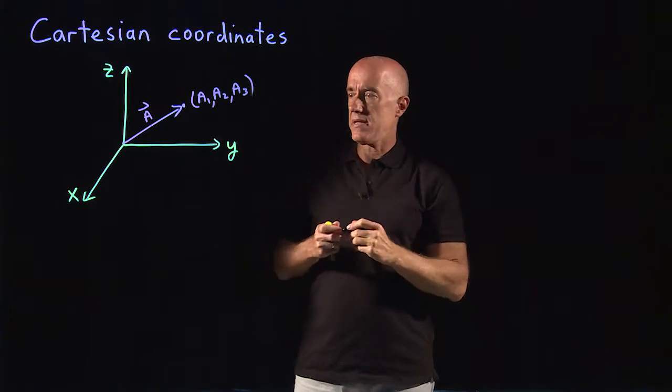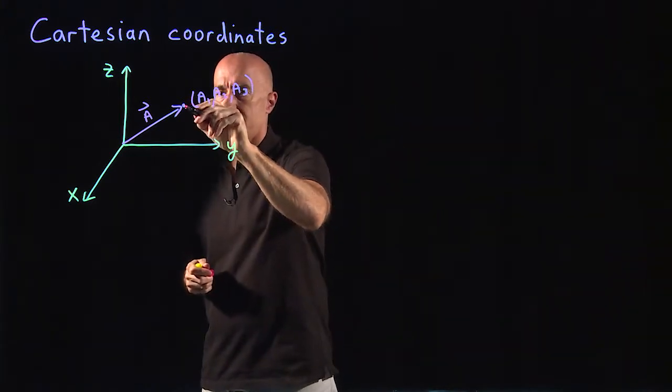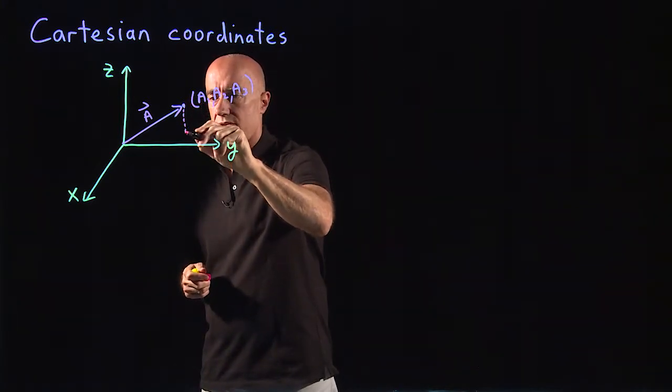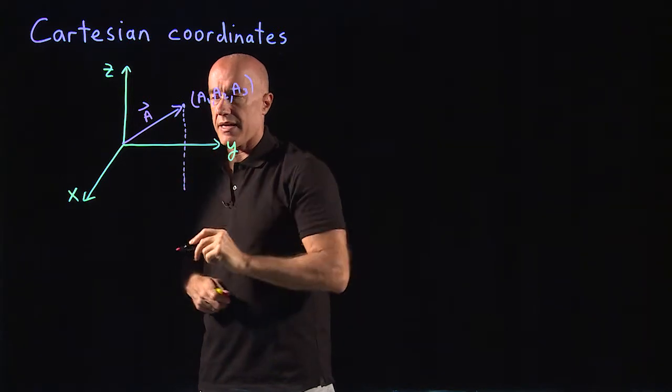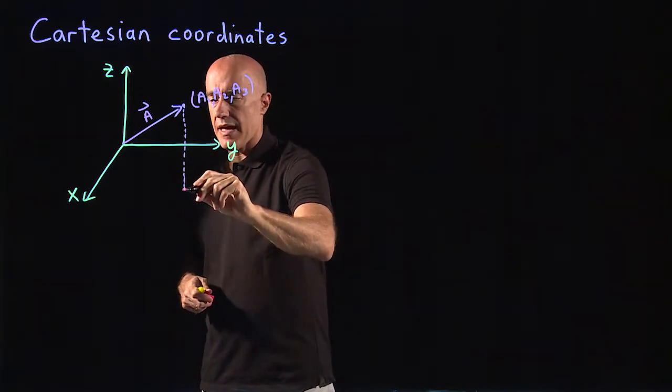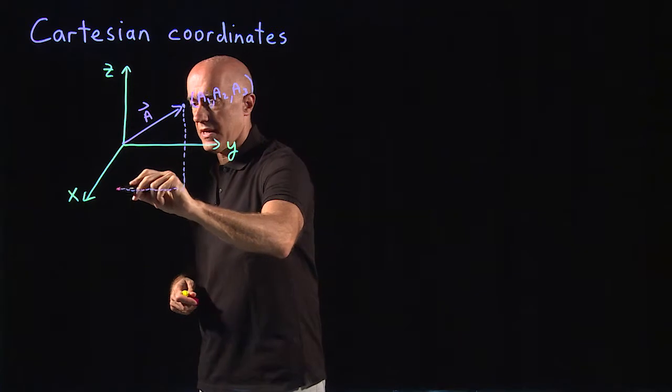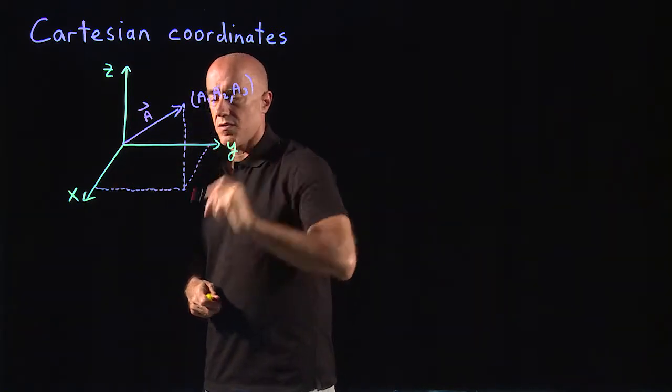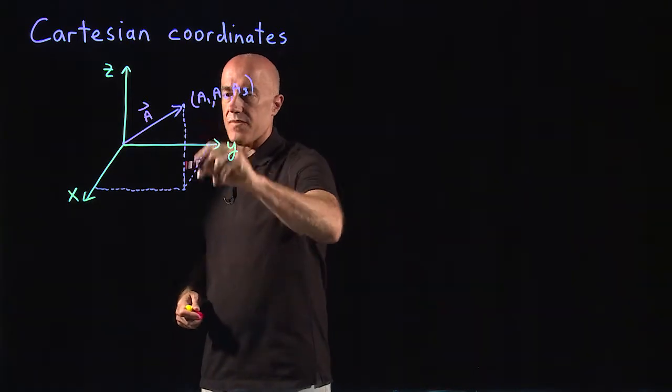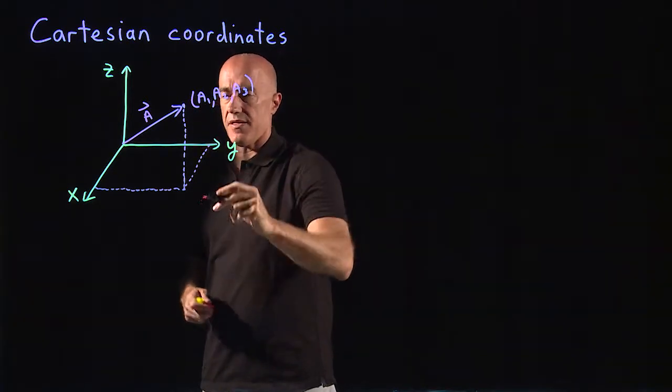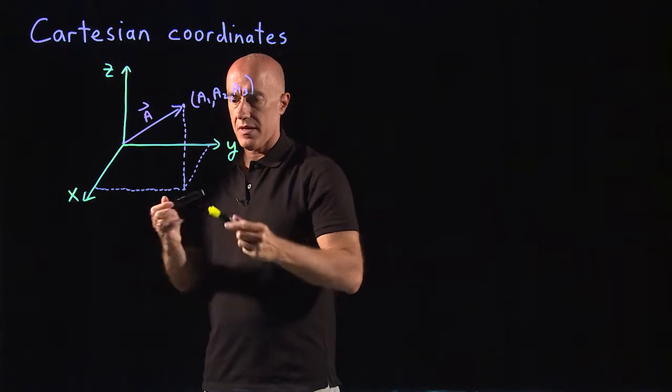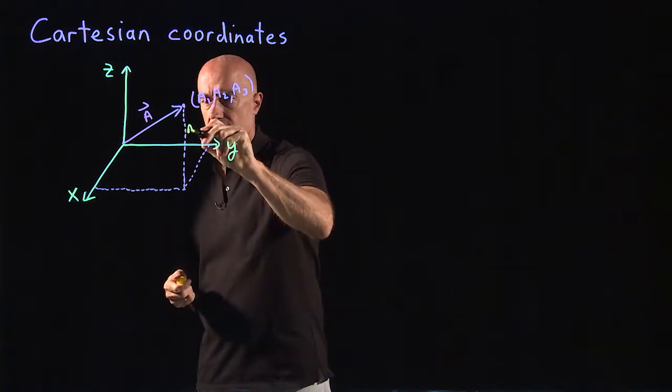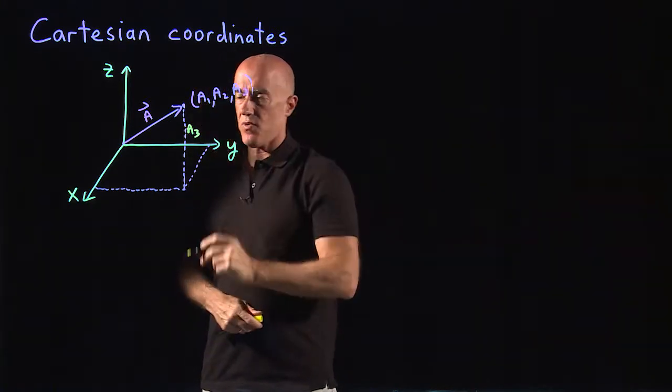What that means is that if we drop this point onto the xy plane, and then go over to the x axis, go over to the y axis, then this height here is a3. This is what our a3 is, the height above the xy plane.